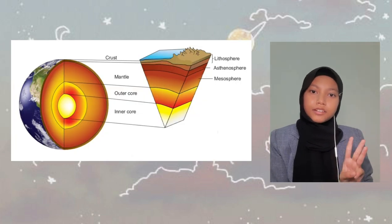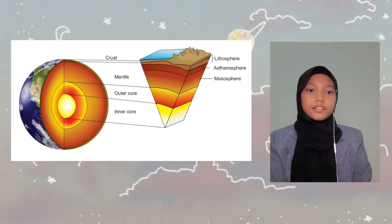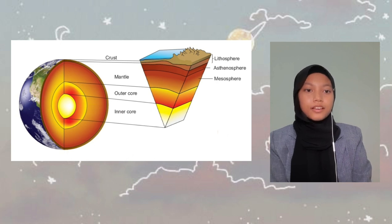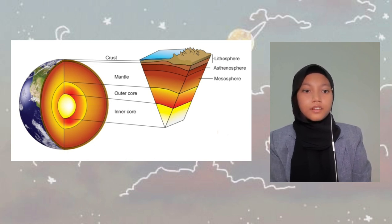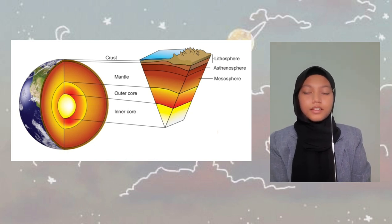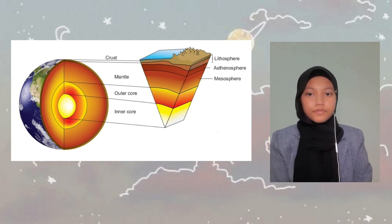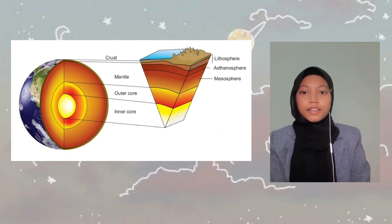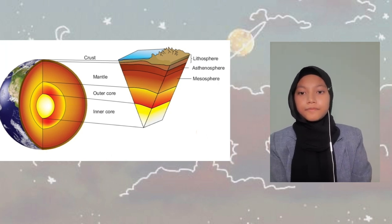Earth can be divided into three main layers according to its physical properties, known as the crust, mantle and core. The mantle consists of the lithosphere, asthenosphere and mesosphere. The lithosphere covers the crust and the top part of the mantle, as shown in the diagram.